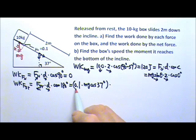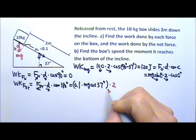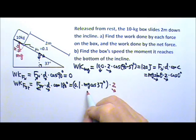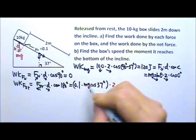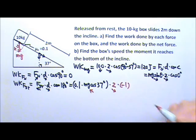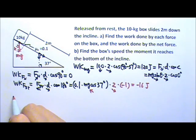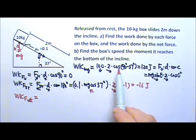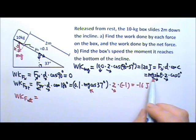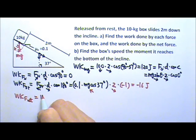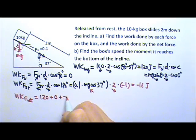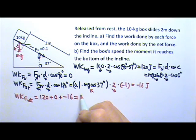So the friction force is μk × Mg cosθ, the displacement is 2 meters down the incline, friction acts up the incline, giving cosine 180 = −1. Plugging in Mg = 100 N gives −16 joules for the work done by friction. The work done by the net force equals the sum of all forces' work: 120 + 0 + (−16) = 104 joules.